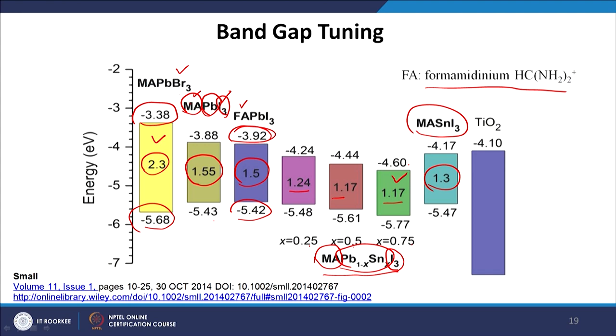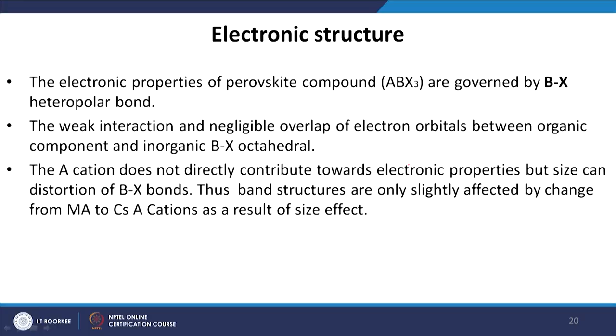Only thing to keep in mind while changing components is the tolerance factor, so that we ultimately get a perovskite crystal structure — either orthorhombic, tetragonal, or cubic — a 3D perovskite crystal structure. The gain we get is in efficiency, because as the band gap tunes, the exciton generation efficiency also changes, giving higher efficiency solar cells. Now we will also study the electronic structure of these materials.